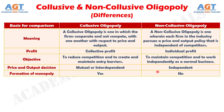Difference No. 5: In a collusive oligopoly, firms agree to set prices and output jointly, so they act as a single firm, which leads to the formation of a monopoly. But, in a non-collusive oligopoly, as no firms collude with one another and a sense of competition exists among them, monopoly does not form.